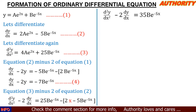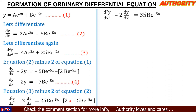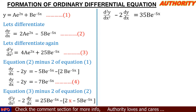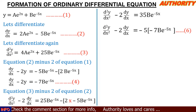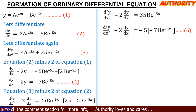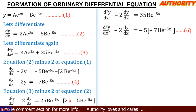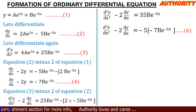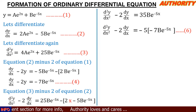In equation 5, I think we can split the right-hand side to accommodate equation 4. We can write the right side as -5 times (-7be^(-5x)). The content in the bracket, which is -7be^(-5x), is exactly what we have on the right side of equation 4. So we can replace -7be^(-5x) with dy/dx - 2y from equation 4.